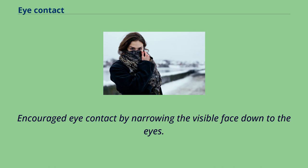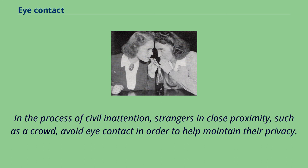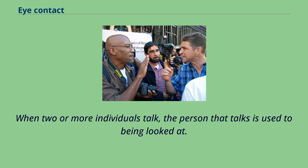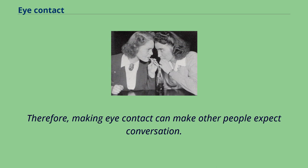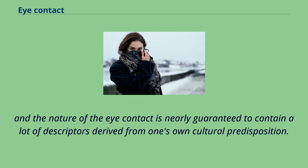Encouraged eye contact can be achieved by narrowing the visible face down to the eyes, either to flirt or to stay anonymous while watching the counterpart. In the process of civil inattention, strangers in close proximity, such as in a crowd, avoid eye contact in order to help maintain their privacy. When two or more individuals talk, the person that talks is used to being looked at; therefore, making eye contact can make other people expect conversation. Discussing eye contact is actually quite difficult because any attempt to categorize the degree and nature of eye contact is nearly guaranteed to contain descriptors derived from one's own cultural predisposition.